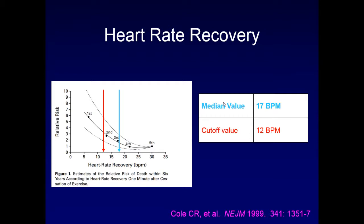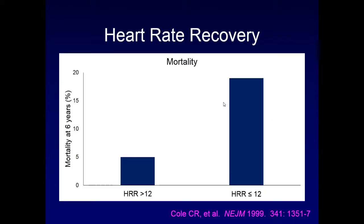A study by Cole in 1999 looked at all patients referred to the Cleveland Clinic for dyspnea evaluation, excluding those with overt coronary disease, and measured heart rate recovery after one minute. The median value was 17 beats per minute; they used a cutoff of about 12 beats per minute. Individuals with heart rate recovery greater than 12 beats per minute had a significantly lower mortality — a four-fold decrease compared to those with recovery less than 12 beats per minute.